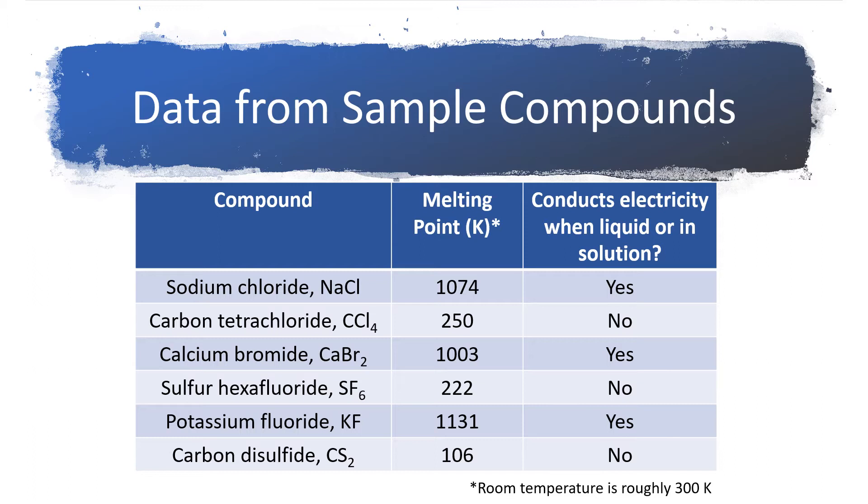This table shows the melting point and the conductivity of a variety of compounds. The melting points range from about 106 Kelvin up to over 1000 Kelvin. Just for reference, room temperature is about 300 on the Kelvin scale. And some of these compounds are electrolytes and conduct electricity in solution and others are not.